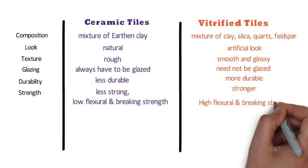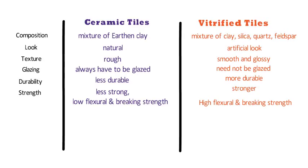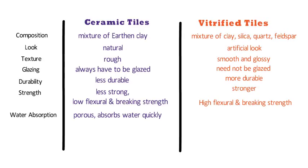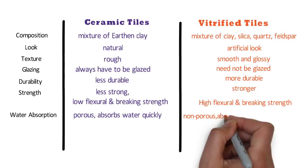Number seven is water absorption. Ceramic tiles are very porous and hence absorb water quickly, so the use of ceramic tiles in outdoor areas will cause the tiles to develop cracks quickly. Vitrified tiles are non-porous and hence absorption of water is negligible, so they are most suitable for wet areas.